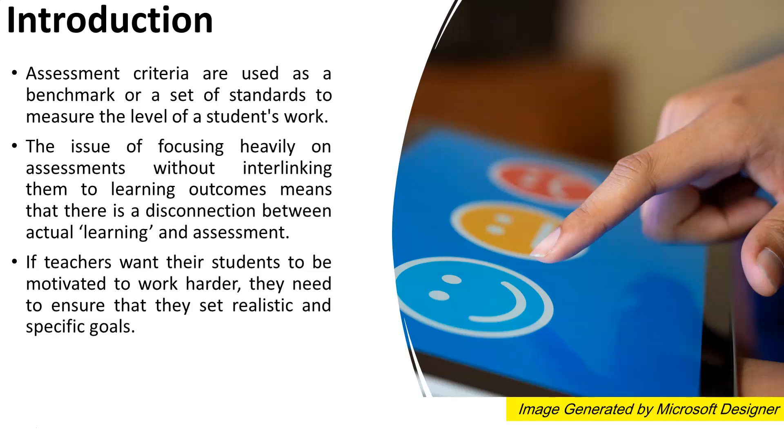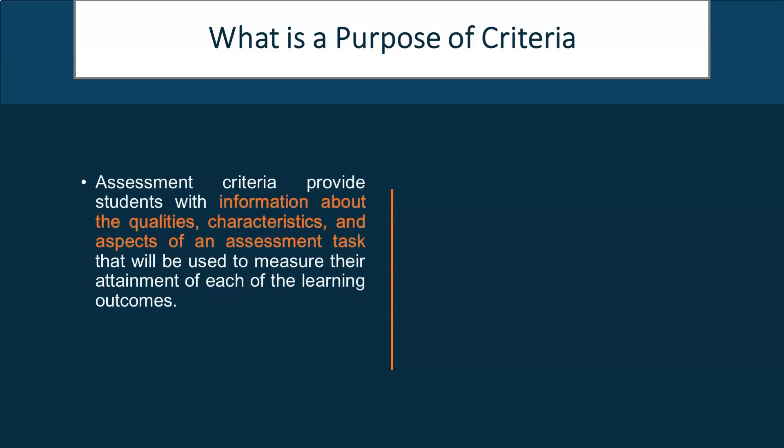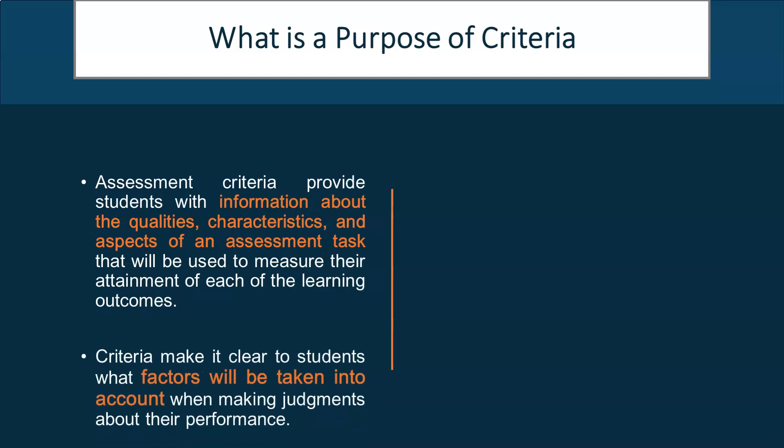What is the purpose of criteria? Assessment criteria provide students with information about the qualities, characteristics, and aspects of an assessment task that will be used to measure their attainment of each of the learning outcomes. Criteria make it clear to students what factors will be taken into account when making judgments about their performance. The most direct way students experience what is needed to achieve the unit's learning outcomes is through the assessment criteria.